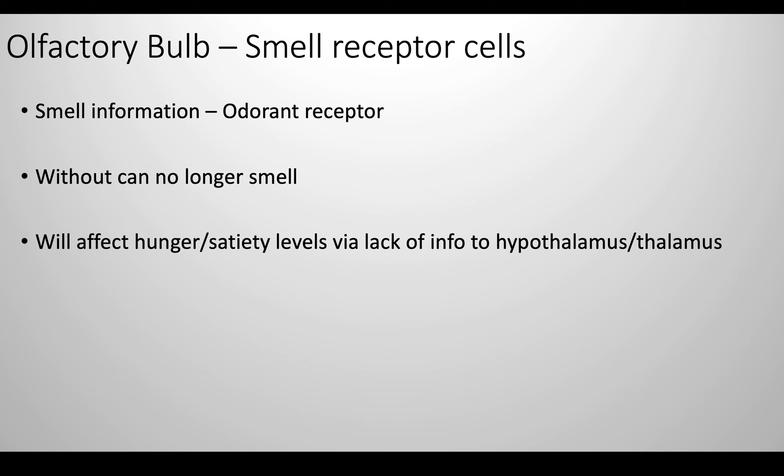Moving on, I'm going to talk about the olfactory bulb. It's responsible for smell reception, because odorant receptors are found here — it's pretty straightforward. Without the receptors, we can't smell. But beyond that, its destruction can affect hunger and satiety levels because it communicates to the thalamus and the hypothalamus.